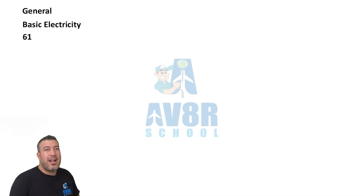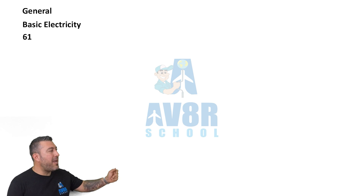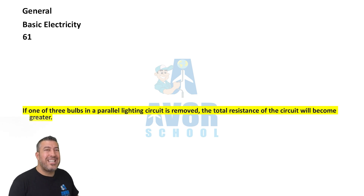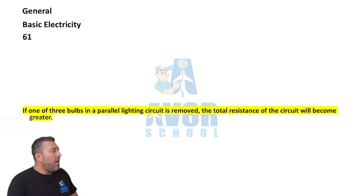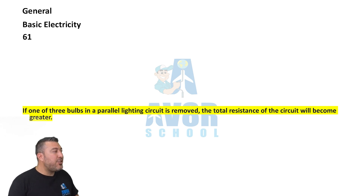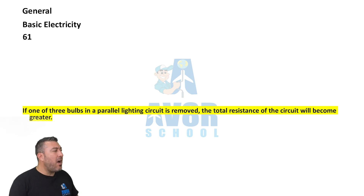All right, welcome back. We're going to continue. Basic electricity number 61. If one of three bulbs in a parallel lighting circuit is removed, the total resistance of the circuit will be greater.